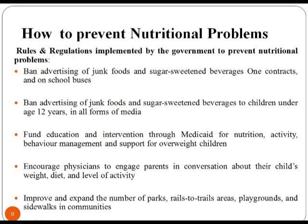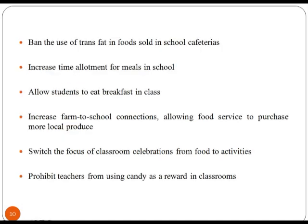Now let us go through some rules and regulations implemented by the government to prevent nutritional problems. 1. Ban advertising of junk food and sugar-sweetened beverages on contracts and on school buses. 2. Fund education and intervention through Medicaid for nutrition activity, behavior management, and support for overweight children. 3. Encourage physicians to engage parents in conversation about their child's weight, diet, and level of activity. 4. Improve and expand the number of parks, playgrounds, and sidewalks in communities.